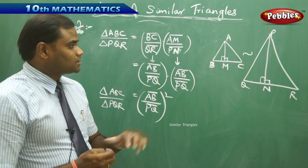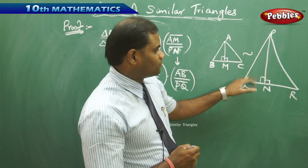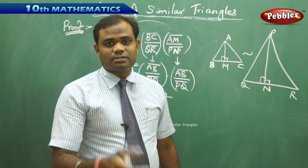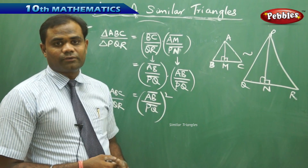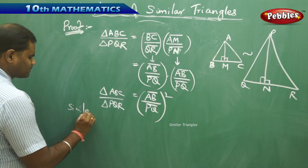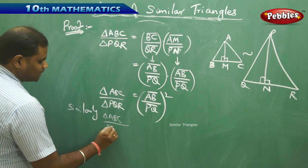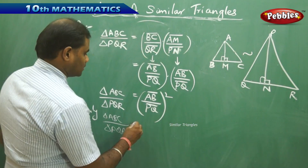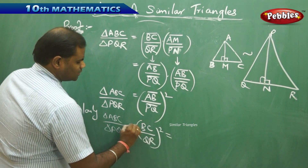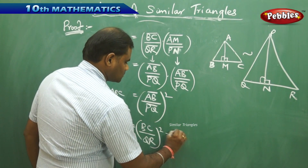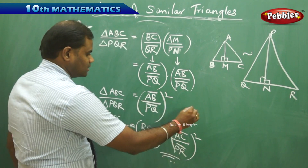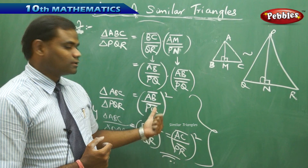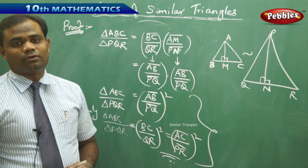This can be written as AB by PQ whole squared for area of triangle ABC by area of triangle PQR. Similarly, if I drop a perpendicular from B to AC and drop a perpendicular from Q to PR and proceed in the similar format, and in proceeding similarly with two other perpendiculars, I get the two other corresponding ratios. Similarly, I get area of triangle ABC by area of triangle PQR equals AB by PQ, or AC by PR whole squared, or BC by QR whole squared. Thus, this entirely gives me the proof that the ratio of areas of similar triangles is nothing but the ratio of the square of the corresponding sides.